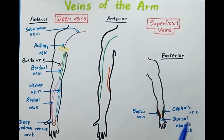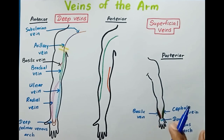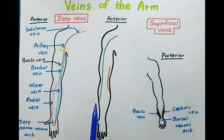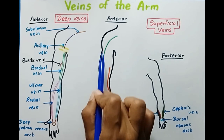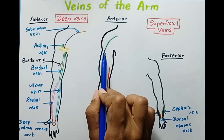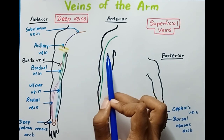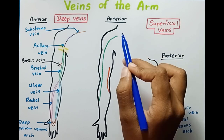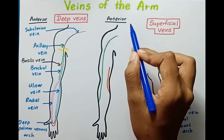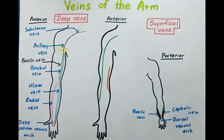The cephalic vein also originates on the posterior side, moves to the anterior side, and ascends along the lateral aspect of the arm. It then curves around the deltopectoral groove and joins the axillary vein.